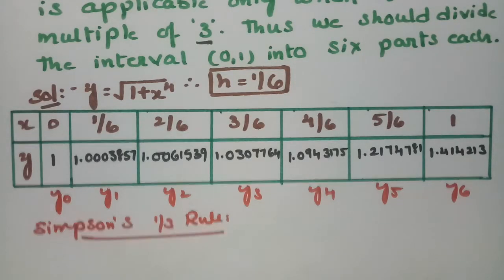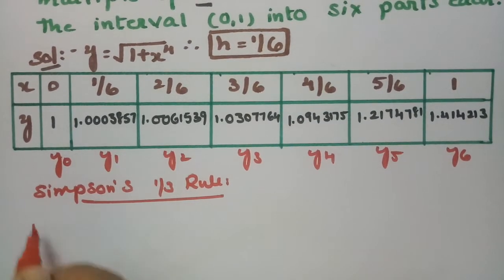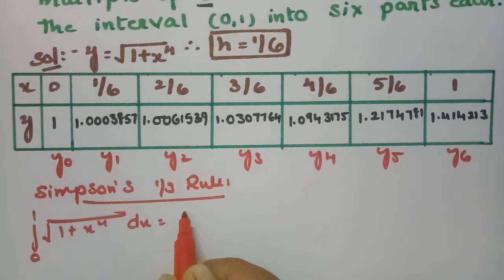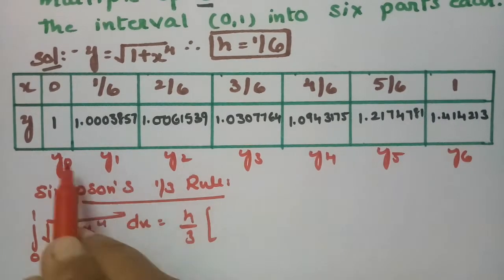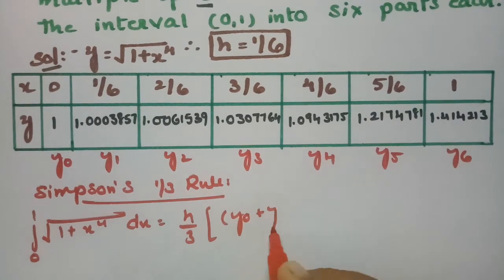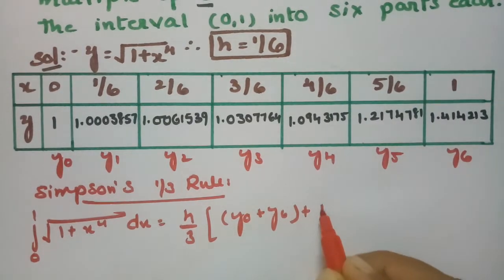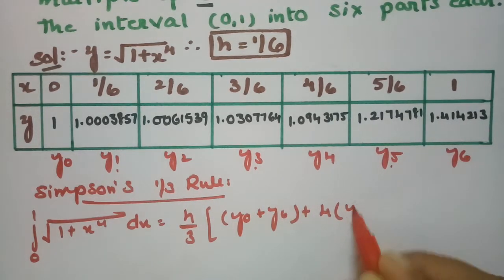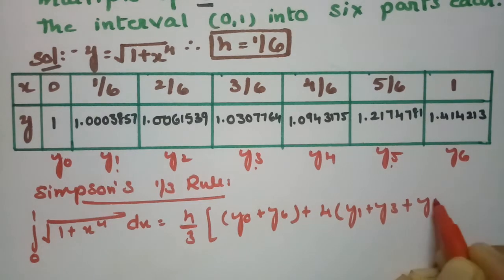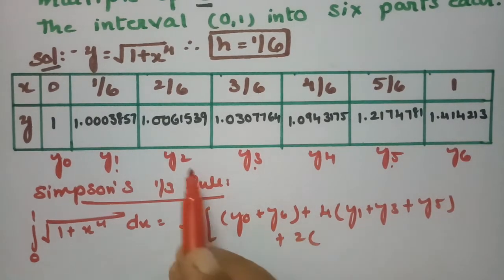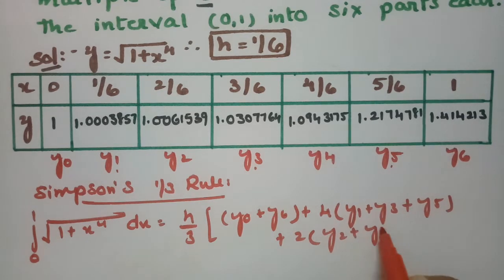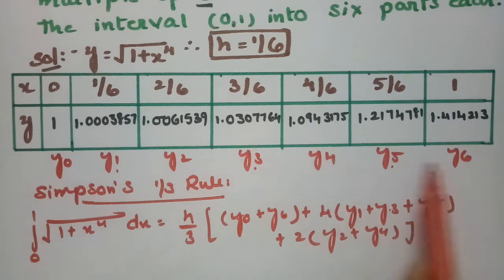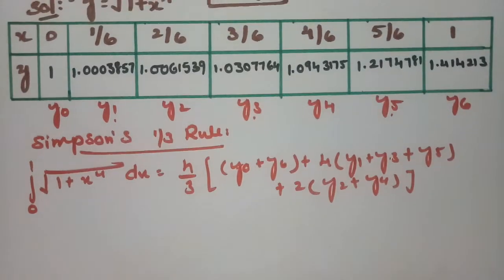Now applying Simpson's 1/3 rule to evaluate ∫₀¹ √(1+x⁴) dx = h/3 × (y₀ + y₆) + 4(y₁ + y₃ + y₅) + 2(y₂ + y₄). Checking: 1, 2, 3, 4, 5, 6, 7 — total 7 ordinates covering 6 intervals, which is balanced. The h value is 1/6.